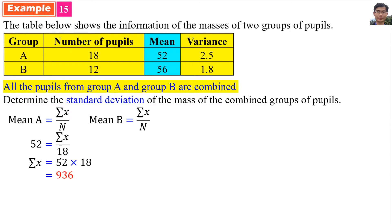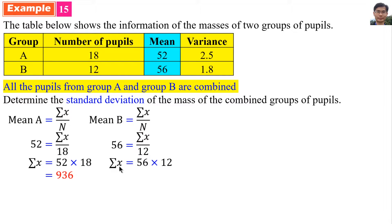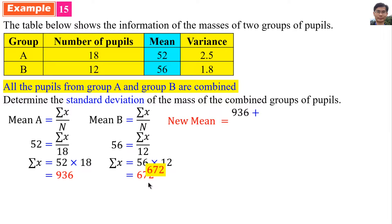Mean B equals summation x per n, and mean B is 56. n for Group B is 12, so summation x for Group B is 56 multiplied by 12, which equals 672. The new combined mean is (936 + 672) per (18 + 12), which equals 53.6.